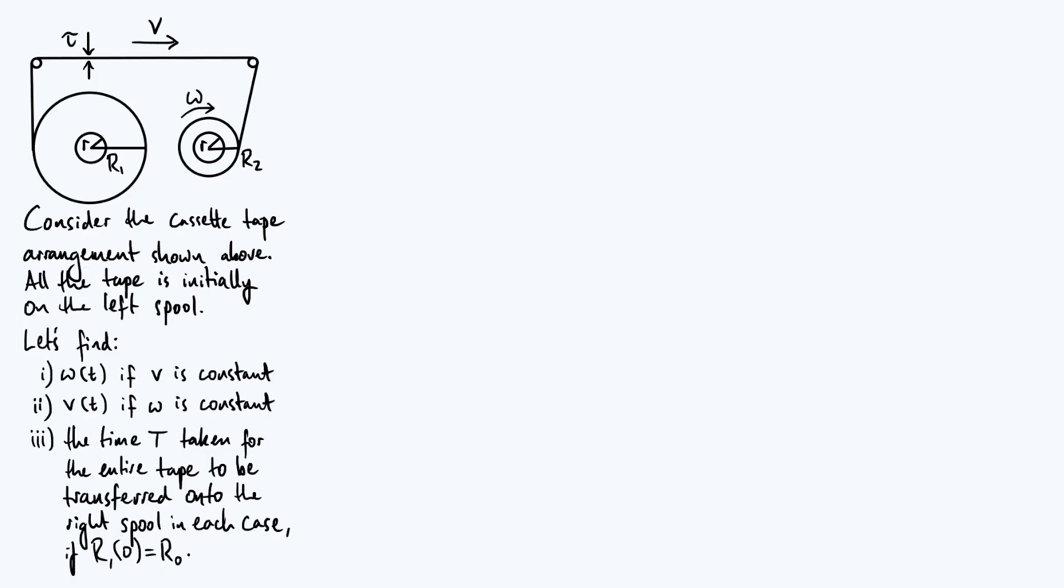You want your tape moving with constant velocity past the sensor in the player, otherwise your music is going to sound as if it's changing pitch over time. But it's fun to consider both cases anyway. In each case, I also want to find the time capital T taken for the entire tape to be transferred from the left spool to the right spool. To come up with an expression for that time, we need to specify an initial condition. I've chosen that the initial value of R1 when time is zero is some constant R0. There are some quite nice interpretations for the expressions we'll get for both times, so we'll discuss those interpretations as well.